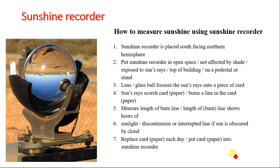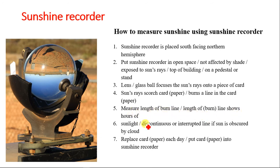A sunshine recorder is placed in a south-facing position in the Northern Hemisphere, in an open space not affected by shade and exposed to sun rays — typically on top of a building on a pedestal or stand. The glass ball lens focuses the sun's rays onto a piece of card, burning a line in the card. The length of the burnt line shows the hours of sunlight. If the sun is obscured by cloud the line is interrupted. Replace the card each day.